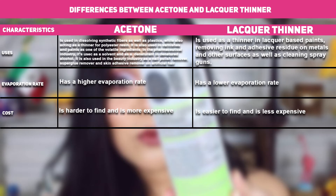Differences between acetone and lacquer thinner. In terms of uses, acetone dissolves synthetic fibers and plastics, acts as a thinner for polyester resin, is used in varnishes, paints, pharmaceuticals, and the beauty industry as a nail polish remover, superglue remover, and skin adhesive remover. On the other hand, lacquer thinner is used as a thinner in lacquer-based paints, removing ink and adhesive residue on metals and other surfaces, as well as cleaning spray guns.